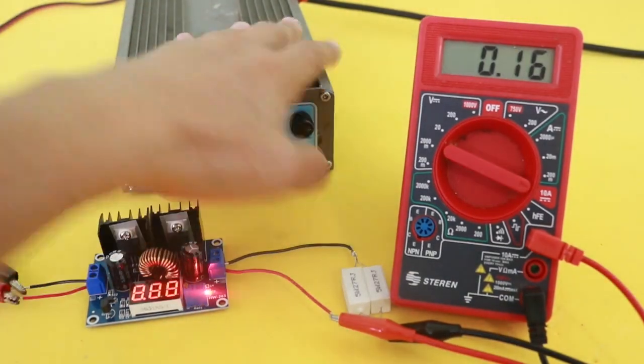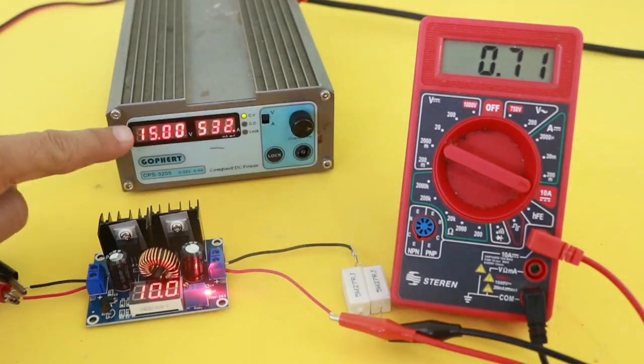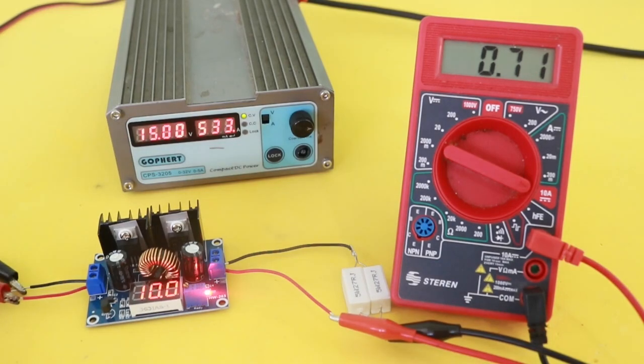Let's check first using an input voltage of 15 volts and an output voltage of 10 volts. Here we can see the input current and the output current in the multimeter. So let's write down these values and calculate the efficiency.